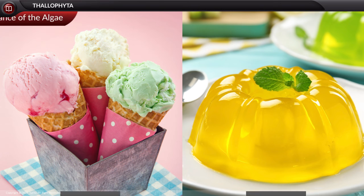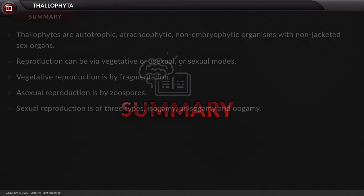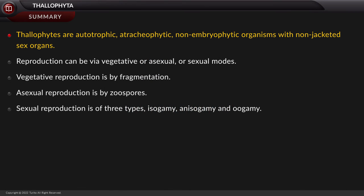These are the details of Thalophyta. In summary, Thalophytes are autotrophic, atracheophytic, non-embryophytic organisms with non-jacketed sex organs. Reproduction can be via vegetative, asexual, or sexual modes. Vegetative reproduction is by fragmentation. Asexual reproduction is by zoospores. Sexual reproduction is of three types: isogamy, anisogamy, and oogamy.